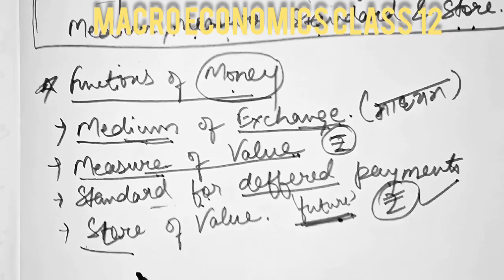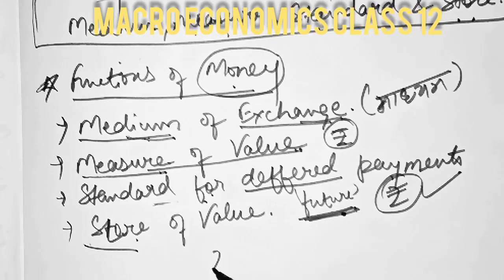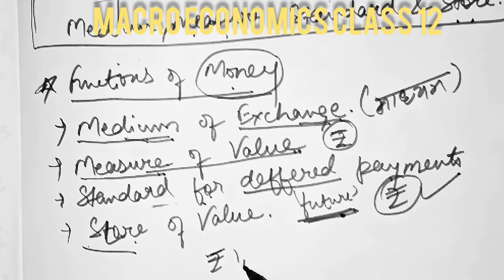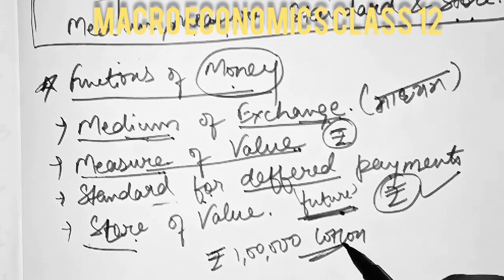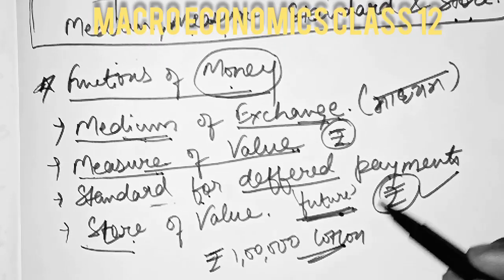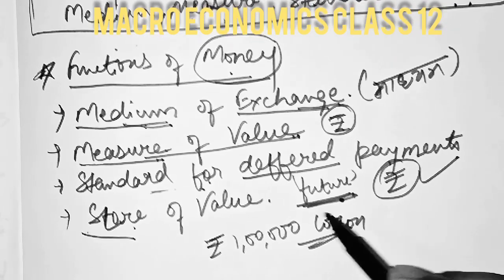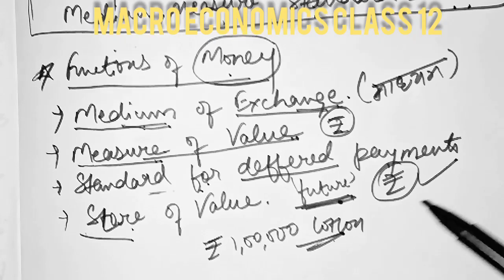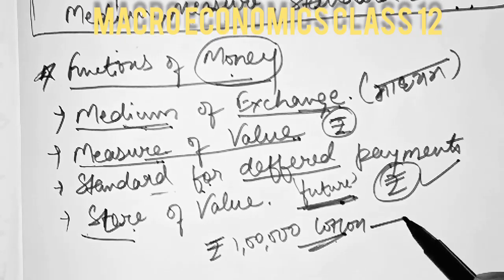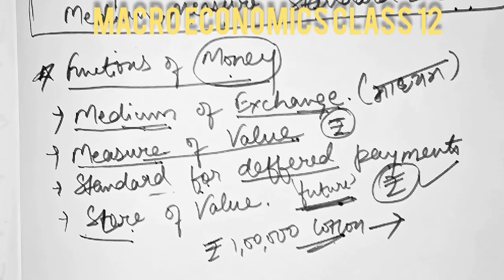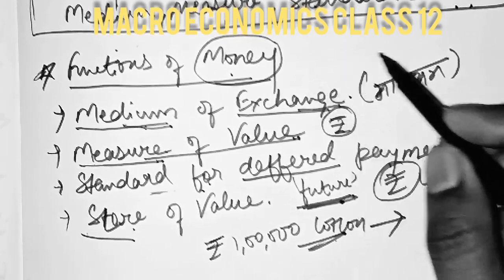The store of value means that money can be stored. For example, if you store a large amount of cotton, it cannot be stored for a longer period of time and the entire house would be occupied. But if you store an equivalent value in money or gold, you can easily use it. So this is the store of value function of money.